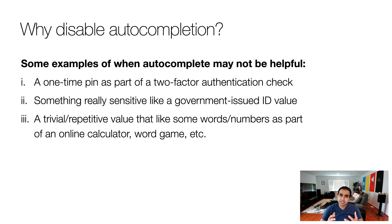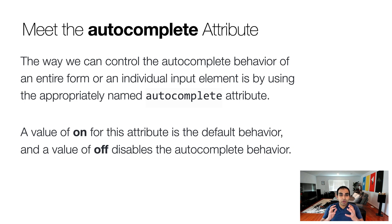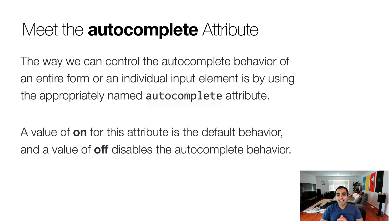The last reason is that not all inputs and form elements are designed for collecting and transmitting information. It could be something that is part of a game or an online calculator — somewhere the value you're providing does not need to be cached. Can you imagine playing a word game where every word you've entered in the past is now showing up in a dropdown or automatically appearing when you load the page? Not cool. So these are some examples of why autocompletion may be something you'd want to disable. The way you can disable it is fairly straightforward: the autocomplete attribute.